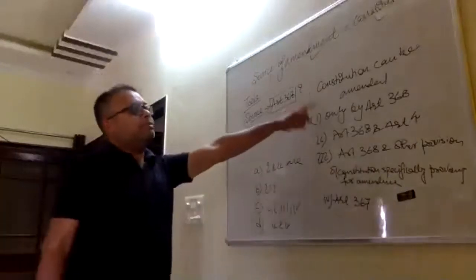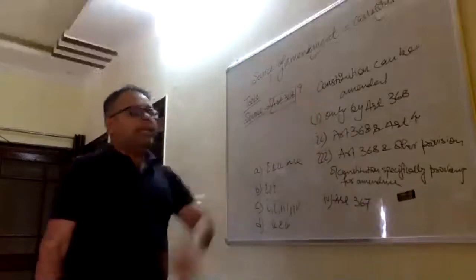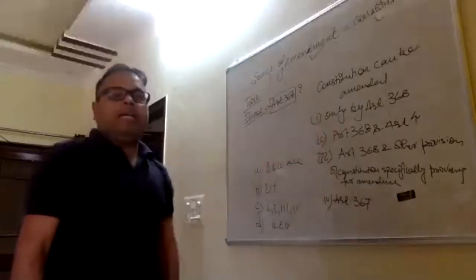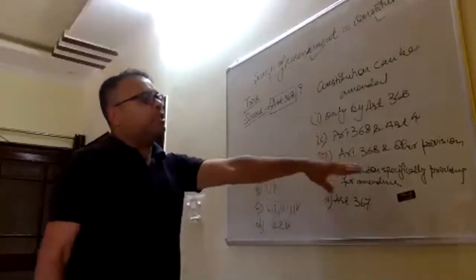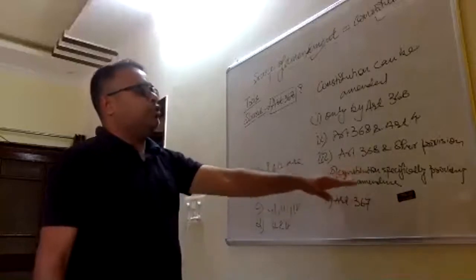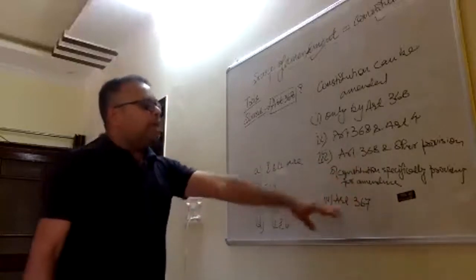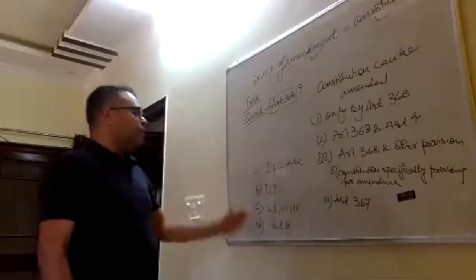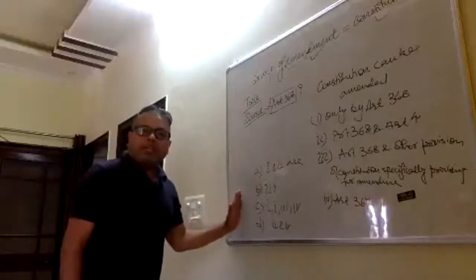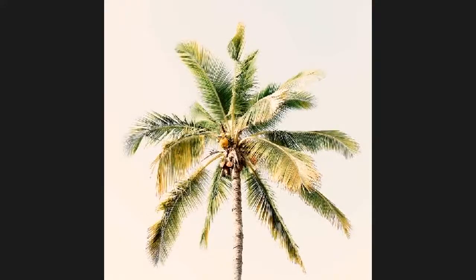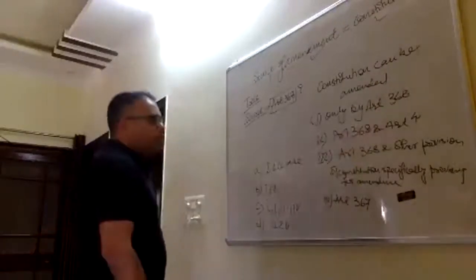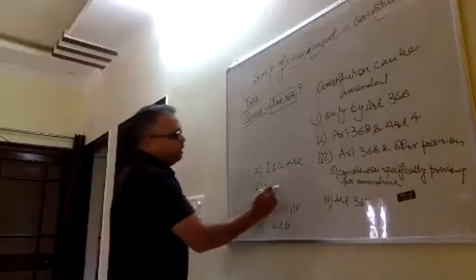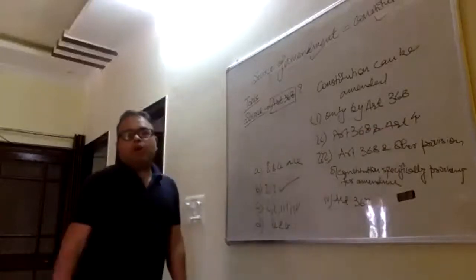The question is constitution of India can be amended. Answer number one: only by Article 368. Answer number two: Article 368 and Article 364. Answer number three: Article 368 and other provisions of constitution, specifically providing for the amendment and Article 4. Answer number four is Article 367. Which one is the correct answer? B. B means Article 368 and Article 364 and Article 4. B is 3, yes. So, does everyone agree? B is 3.